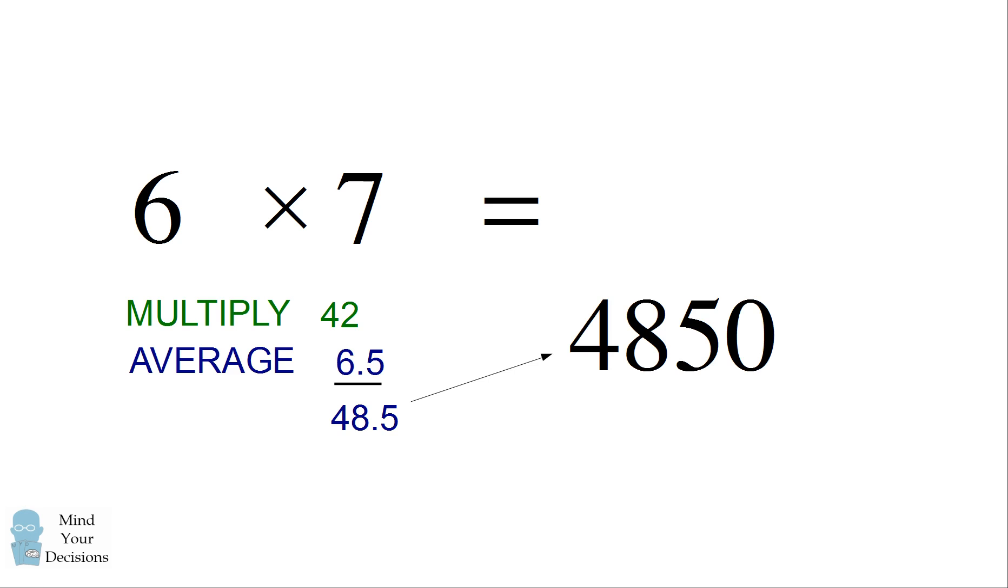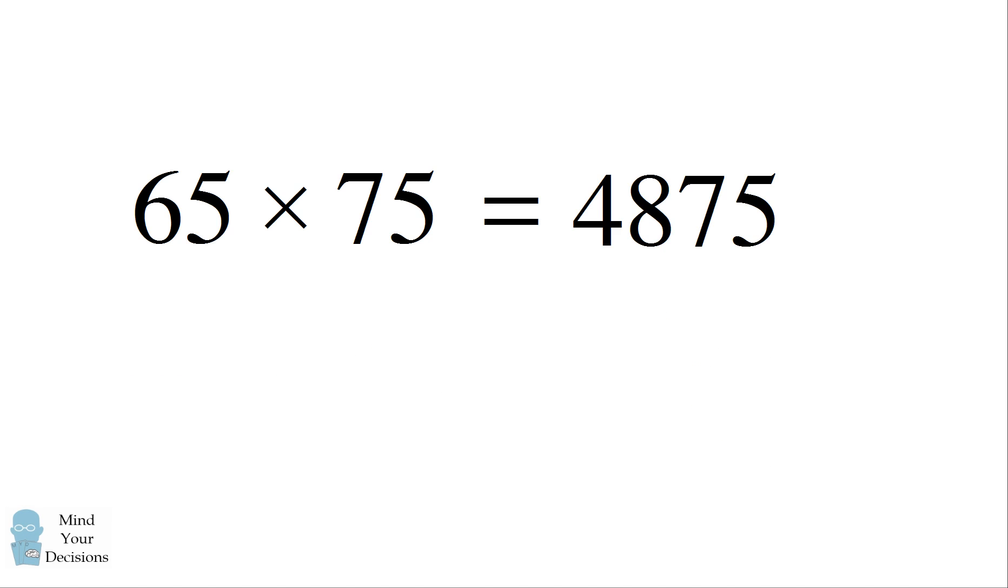Now we multiply by a hundred to get 4850, and then we add 25. So we have 4875. And that's our answer. 65 by 75 is 4875.